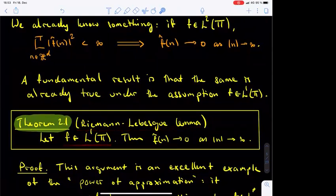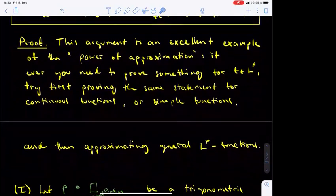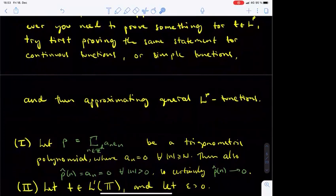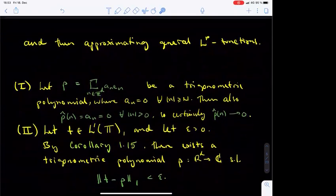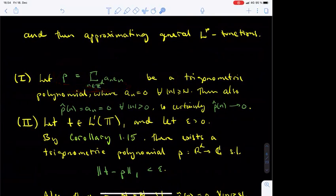The proof of the Riemann–Lebesgue lemma is an excellent example of the power of approximation. If ever you need to prove a statement regarding LP functions, try first proving it for continuous functions or even smooth functions. If you succeed at that, there is a good chance that you can approximate a more general LP function by these smooth or continuous functions and then deduce whatever you wanted to prove for general LP functions. The Riemann–Lebesgue lemma is a statement concerning L1 functions, and we have learned that L1 functions can be approximated in the L1 norm by trigonometric polynomials. Hence, we will first check that the lemma holds for trigonometric polynomials, and then deduce the general case by approximation.